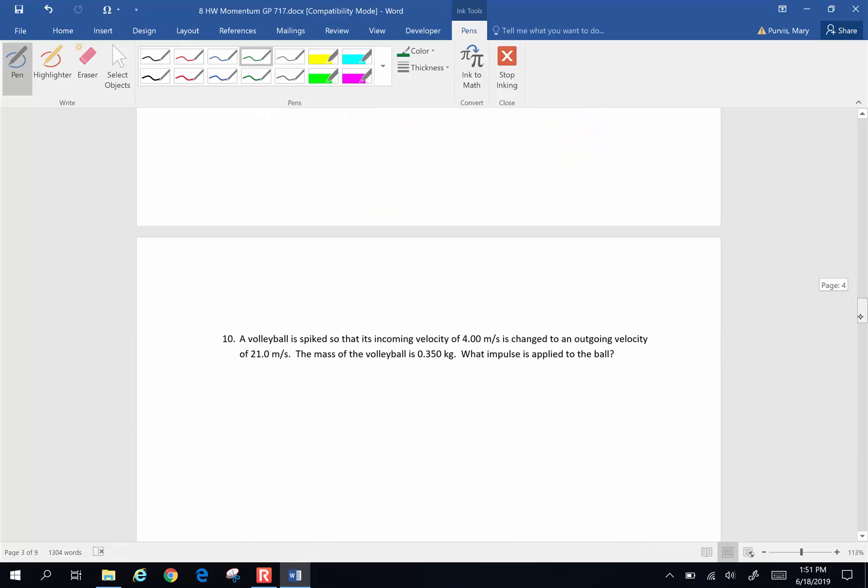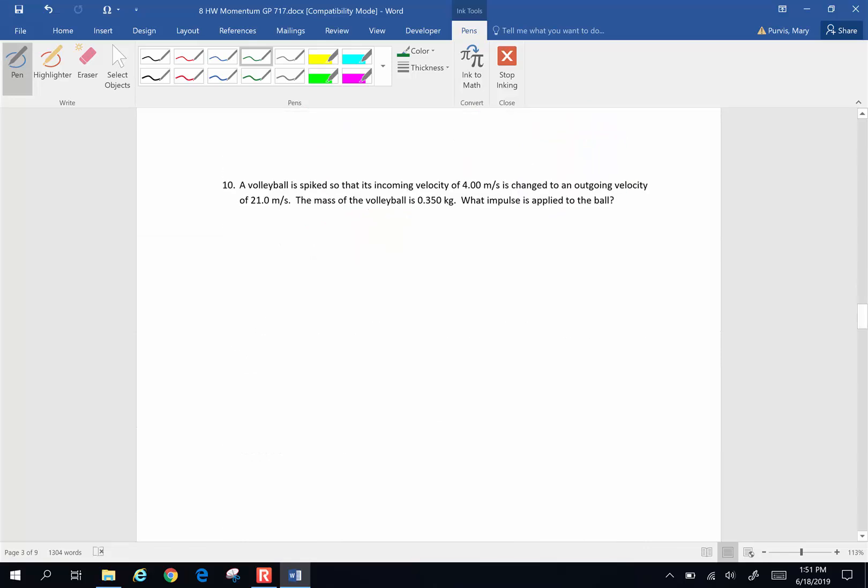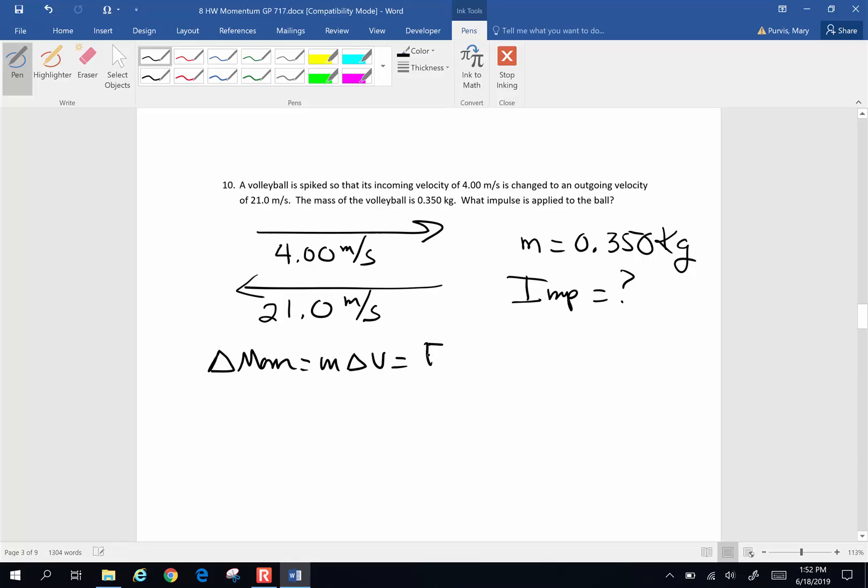All right, let's do one more of these. Number 10. A volleyball is spiked so that it has an incoming velocity, it has a velocity going this way of 4 meters per second. It changes to an outgoing velocity, very similar to the last problem, of 21 meters per second. If the mass of the ball is 0.0350 kilograms, I want to know what impulse is applied to the ball. What is the impulse?